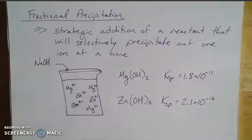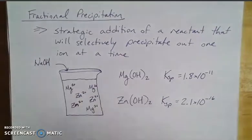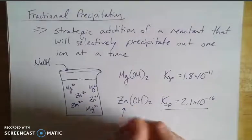Well, the one that's going to precipitate out first is going to be the one that wants to be a solid more, that wants to be ions less. And so the one that wants to dissolve less in solution is obviously the one with the smaller KSP value. So my zinc hydroxide would precipitate out first.